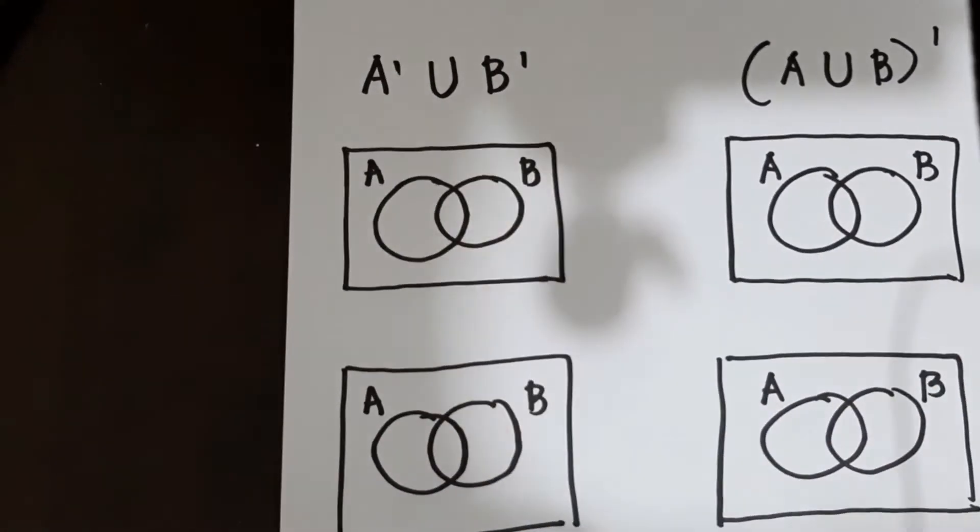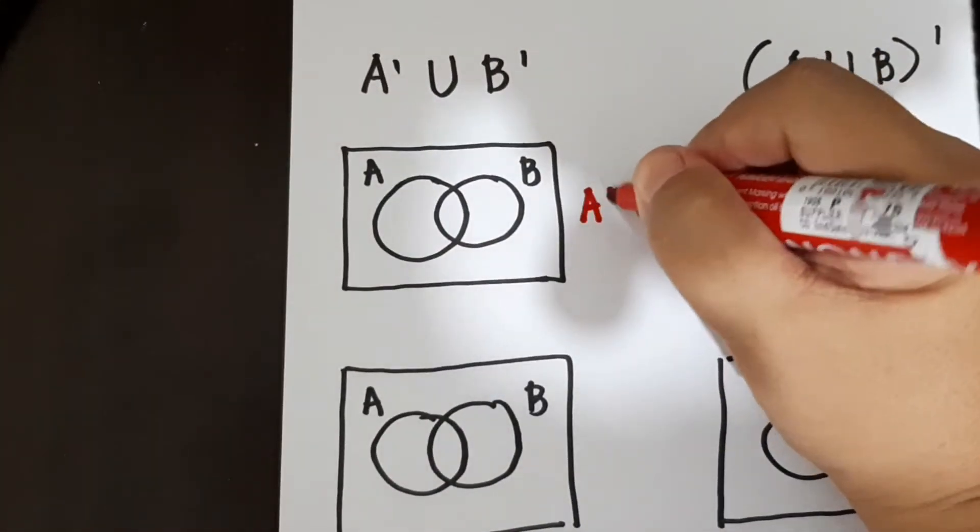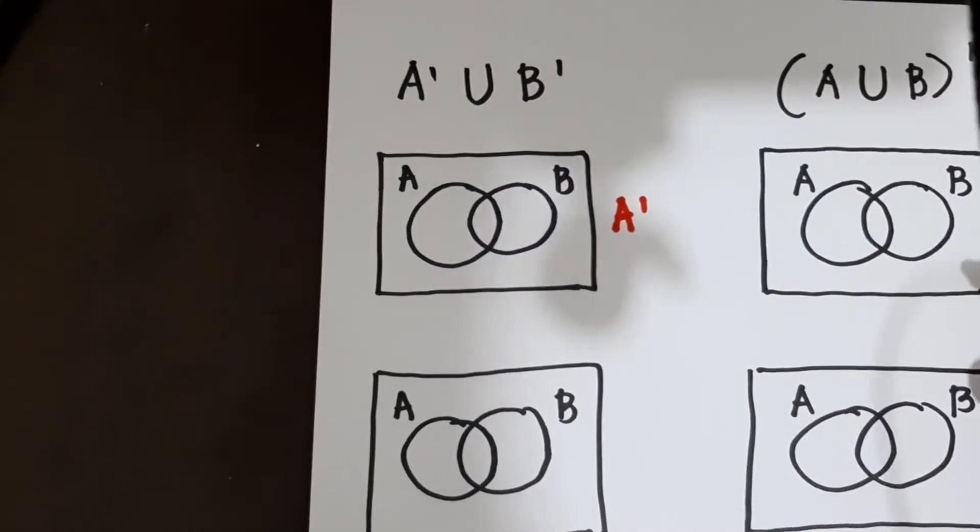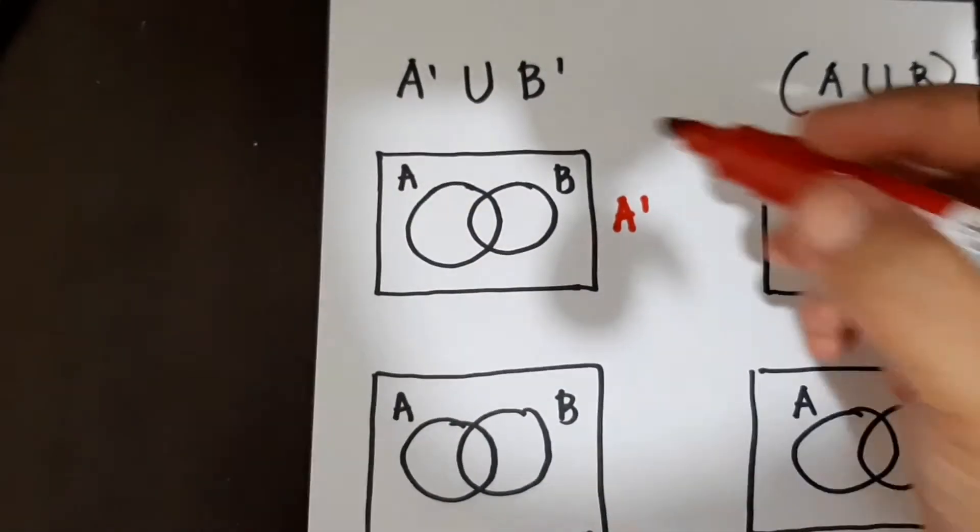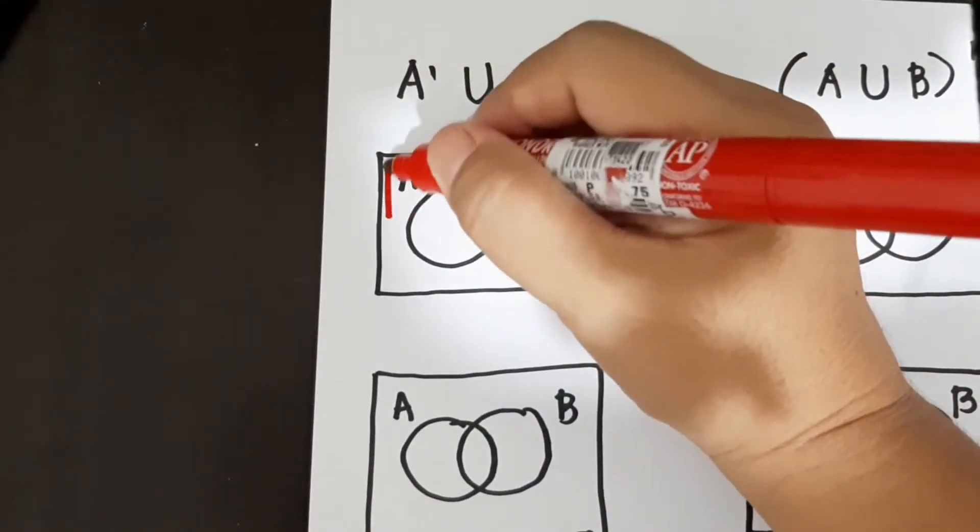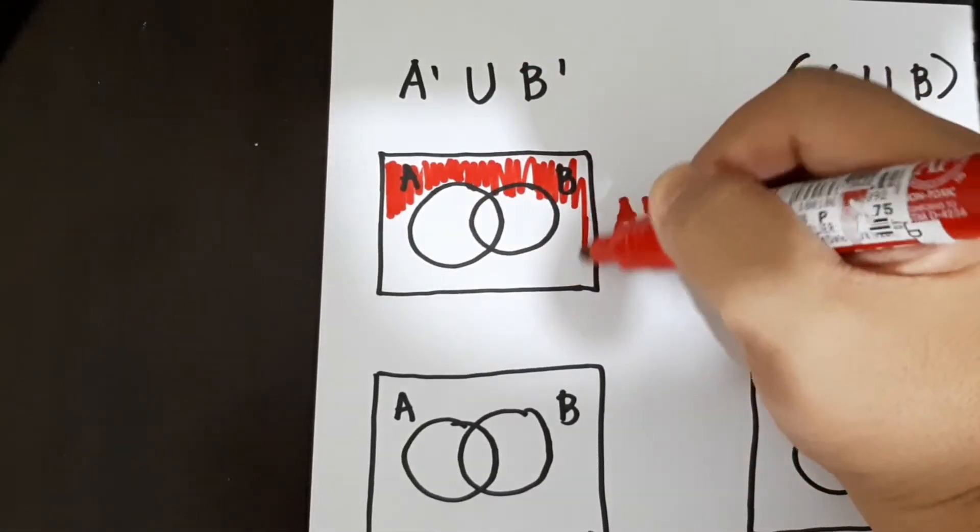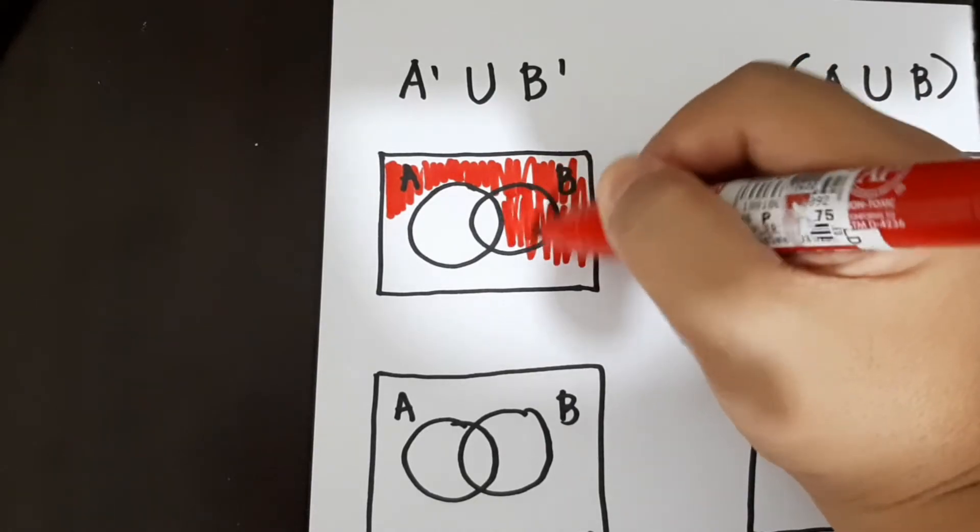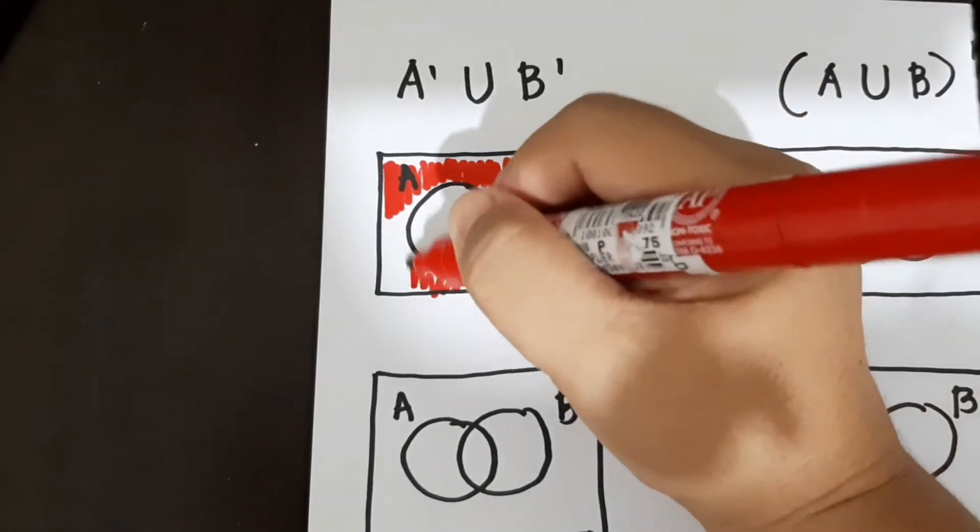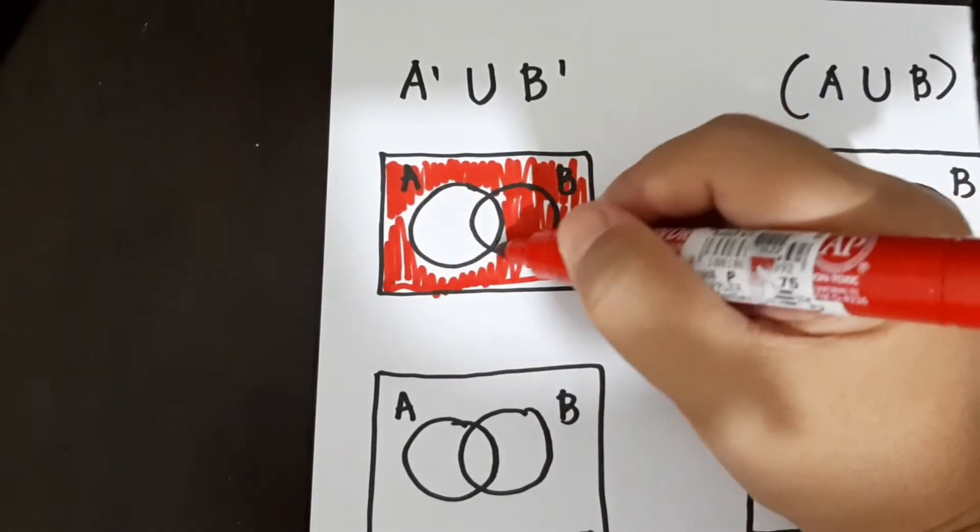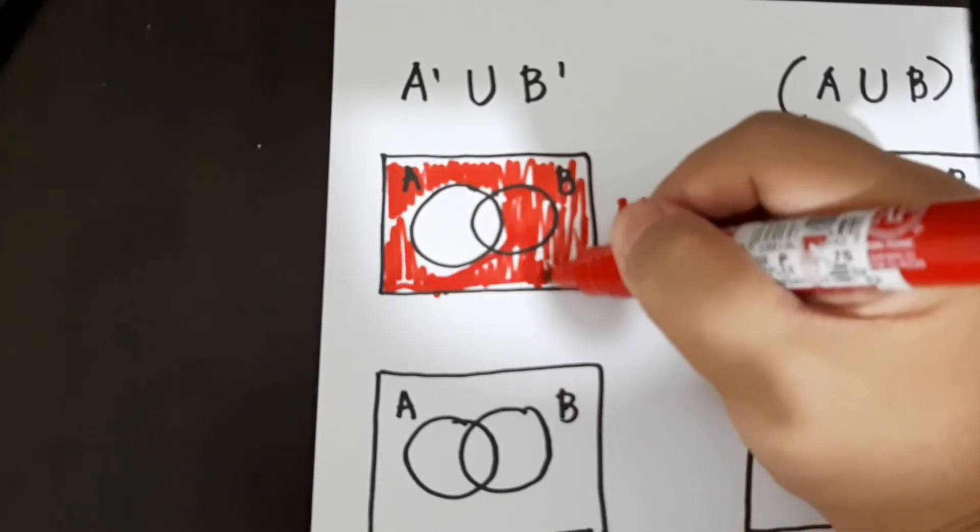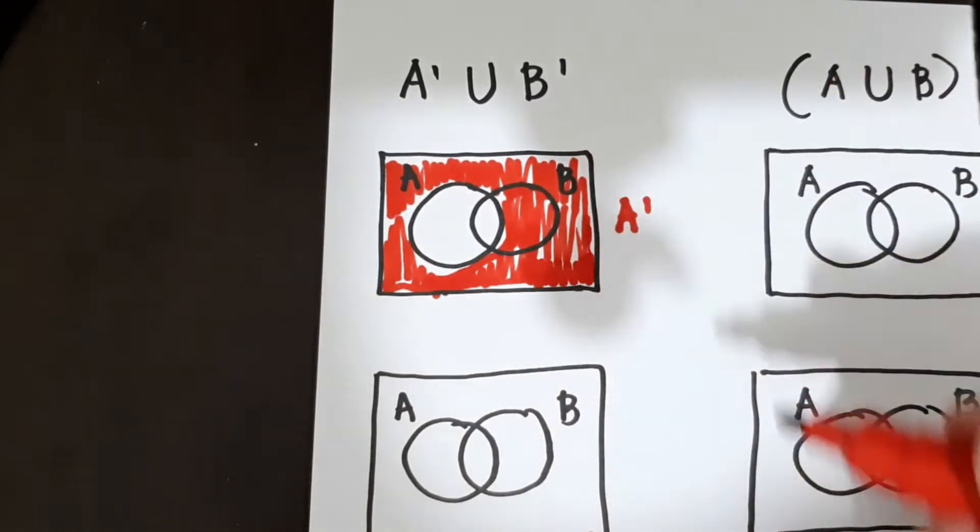So unahin muna natin yung not A. So this would be not A. Diba pag not A, ang hindi lang sinishadean ay yung set ng A or yung circle ng A. So shaderan natin.